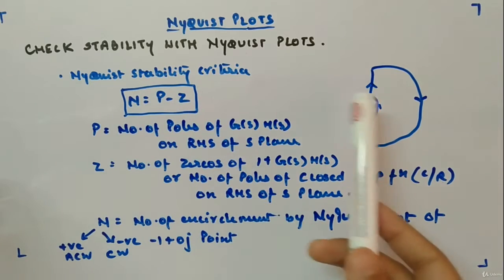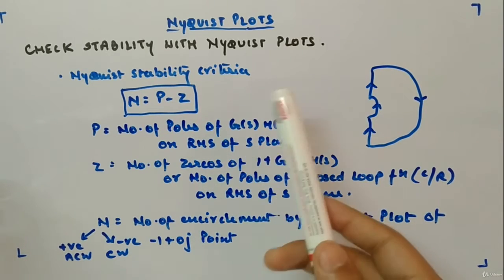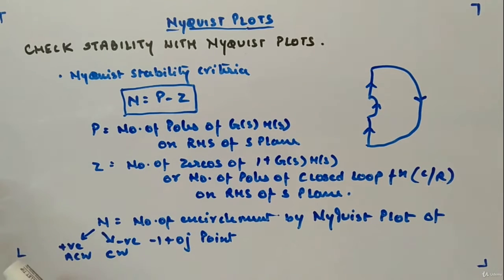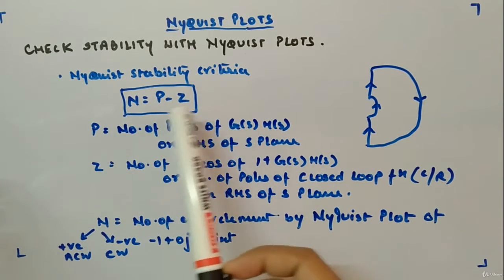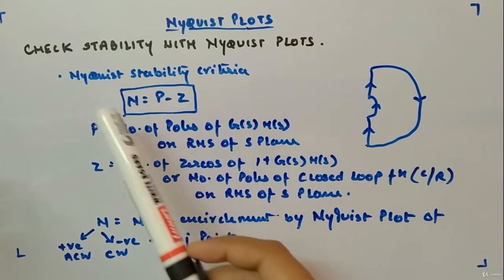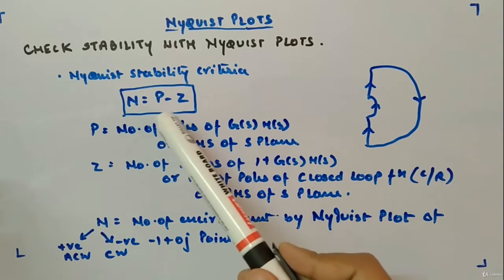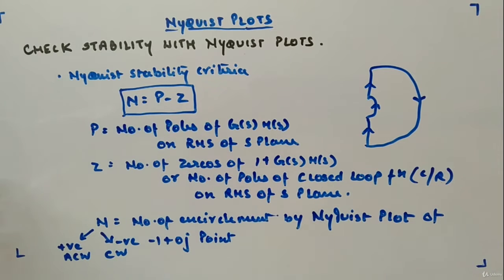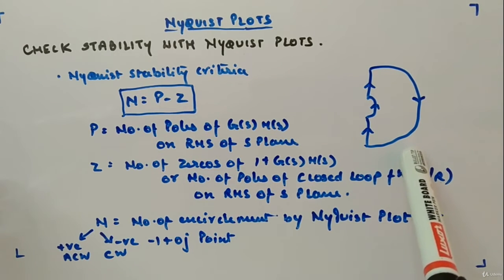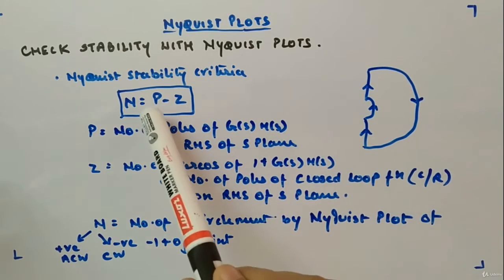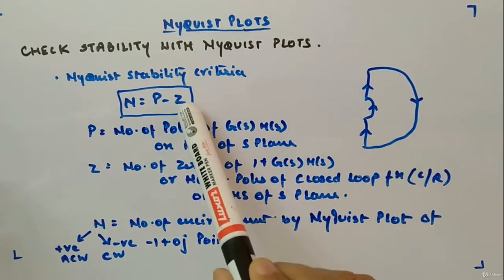It's an easier way of defining stability by Nyquist stability criteria. This is given by Nyquist, who gave a stability criteria N = P - Z. This is the formula given for this contour. For the other contour I'll give in the next video.